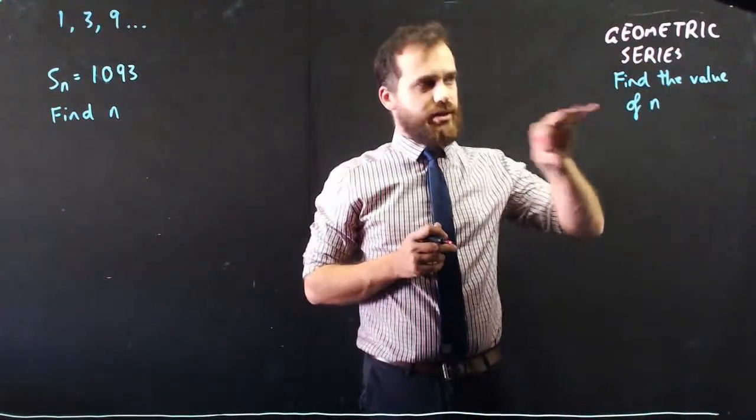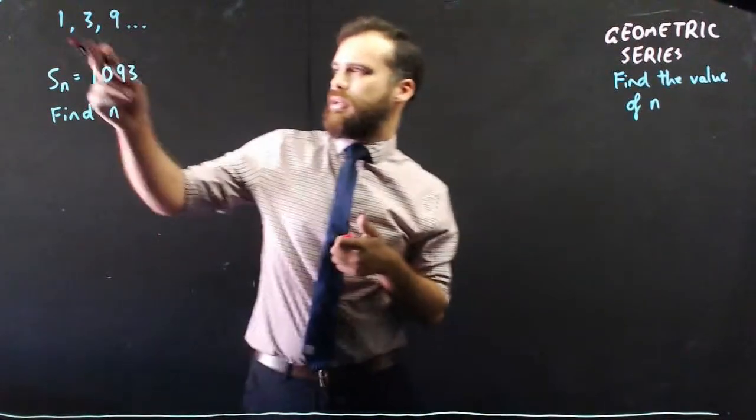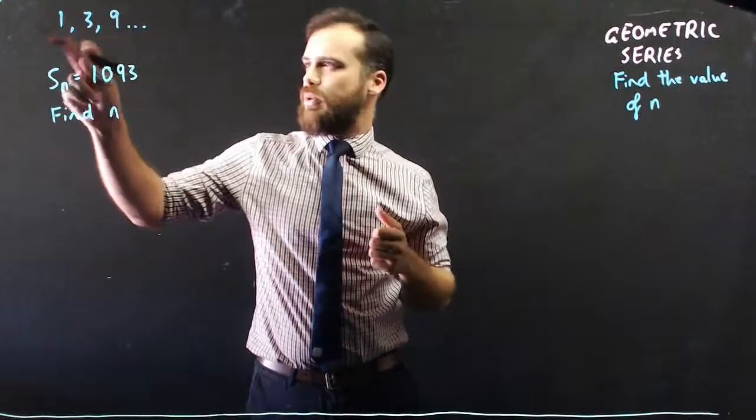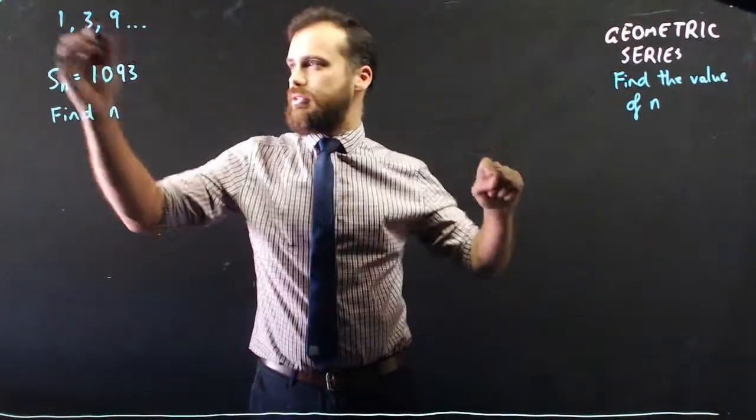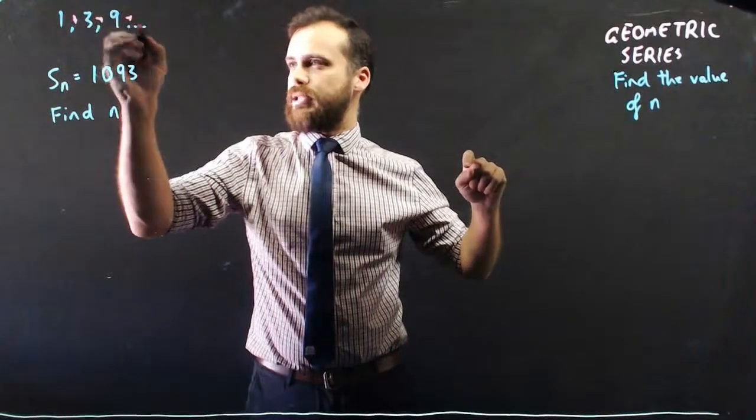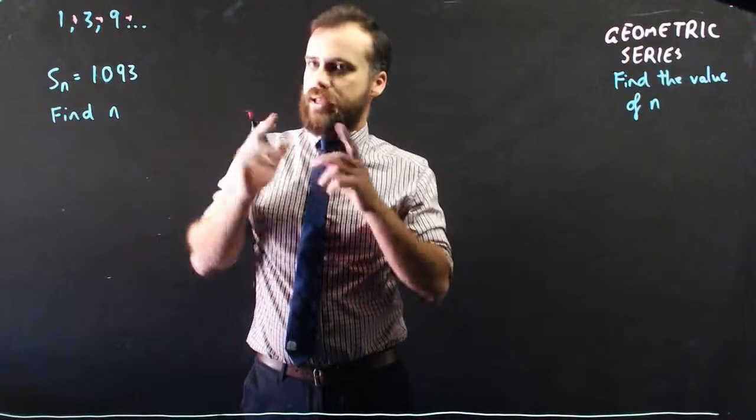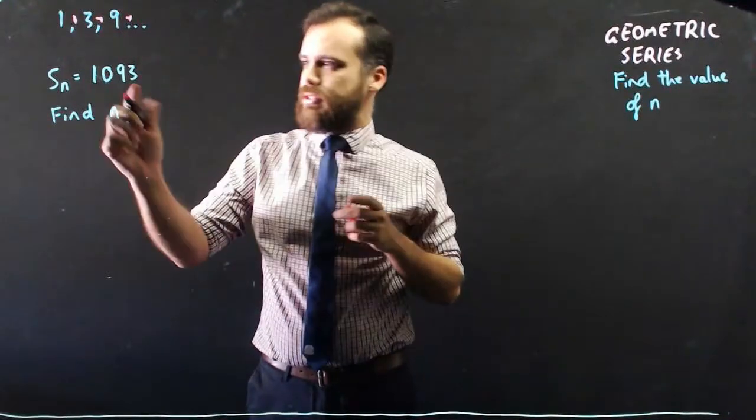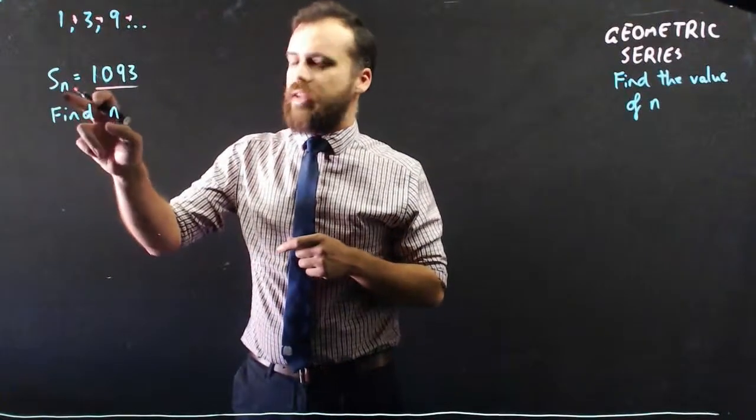Alright, so geometric series again, this time we're going to find the value of n. So the question, something like, here's our geometric sequence: 1, 3, 9. We're going to add them together, geometric series, so 1 plus 3 plus 9 plus etc. Now how many terms would we have to add together to get 1,093? So Sn, what's the n value for that?